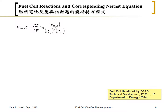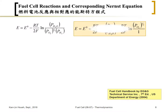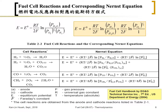From thermodynamics, the cell voltage equals E₀ minus (RT/nF) times the log of the water pressure divided by oxygen pressure and hydrogen pressure. You can find this on fuel cell handbooks and websites, where the total equation is written out for different reactions, showing the cell voltage as a function of reactant pressures — all derived from thermodynamics, i.e., the Nernst equation.